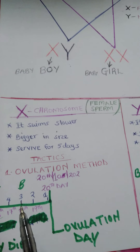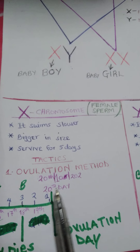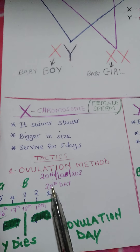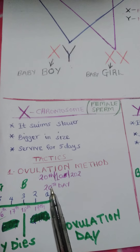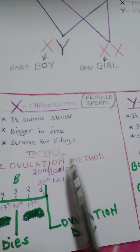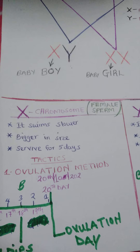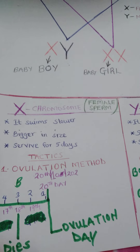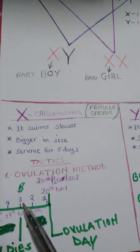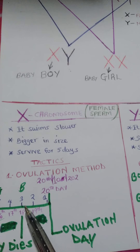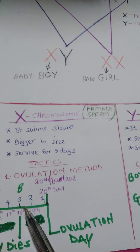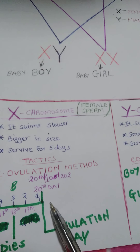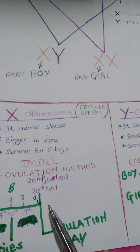You know that your menstrual period is on date 20th. So, if you need a baby boy, you need to have sexual intercourse with your partner 3 days before your menstrual period date.